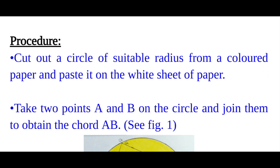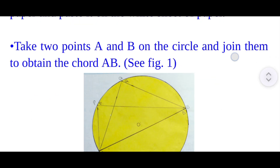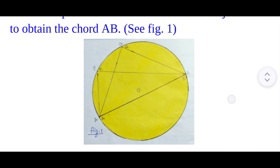Procedure of this activity. First step: cut out a circle of suitable radius from a colored paper and paste it on a white sheet of paper. Second step: take two points A and B on the circle and join them to obtain a chord AB, as you can see in this figure.